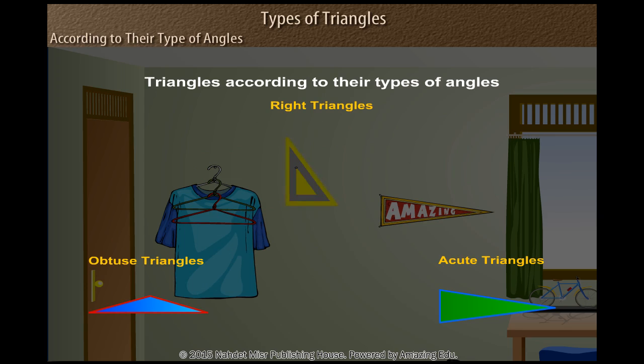Right triangles: one angle has a measure equal to 90 degrees.